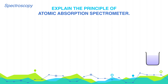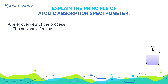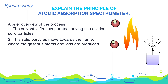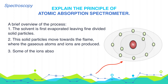So let's discuss a brief overview of the process. The solvent is first evaporated, leaving finely divided solid particles. These solid particles move towards the flame where the gaseous atoms and ions are produced. Some of the ions absorb the energy from the flame and get excited to high energy levels.